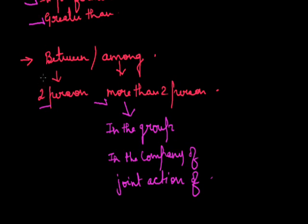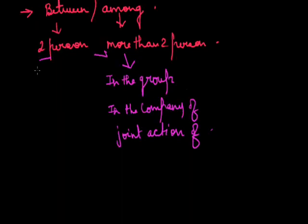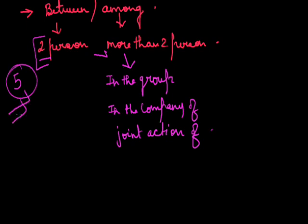To summarize: 'between' is used for two people, and 'among' is used for more than two. However, if you are talking about more than two people but referring to each of them individually, then 'between' can also be used.